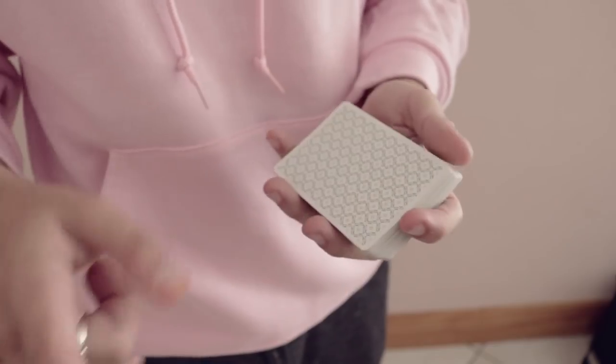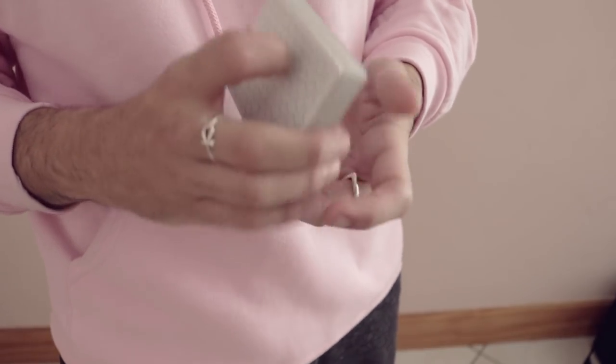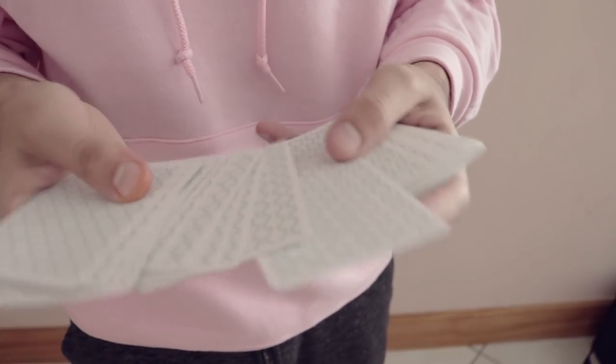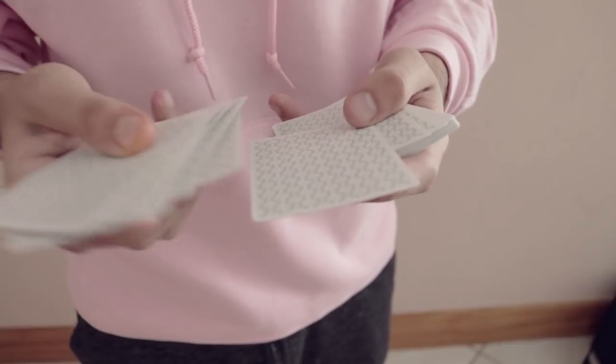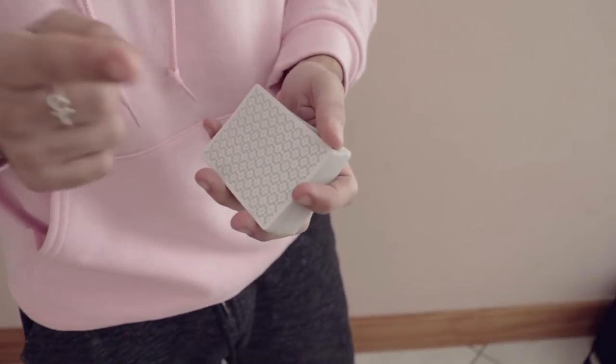So you're going to have another spectator look in the eyes of the spectator that picked the card initially and try to pick up on what card they picked. And of course they're going to be wrong because they're going to touch any card. And you're going to do the prophecy move with the card that they happen to touch. So let's go over the prophecy move for what has to be the 12th time.